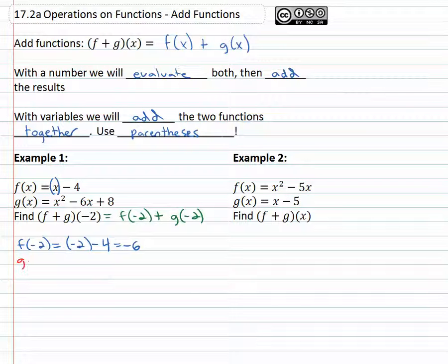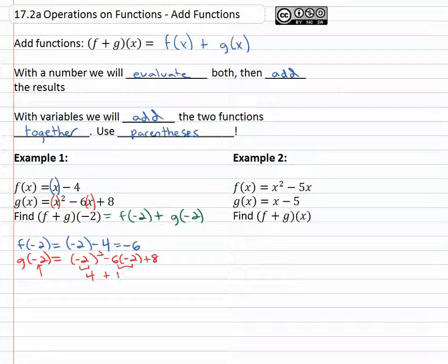Now we have to find g(-2). Well that means we go to the g function, and each of the variables is going to be replaced with what's inside the parentheses, -2. So it's going to be (-2)² - 6(-2) + 8. Little more work here but not hard. We can square and multiply so we have 4 + 12 + 8, which is going to be 24.